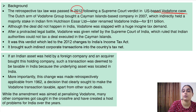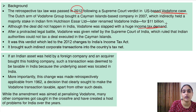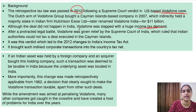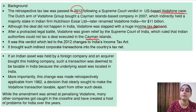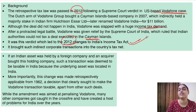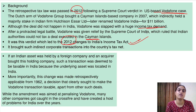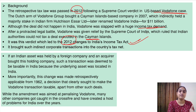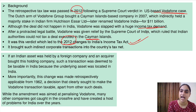Vodafone argued that since they had not directly bought assets in India, they should not be taxed in India. The legal battle went on and the Supreme Court gave a verdict that Indian authorities should not tax the deal executed in Cayman Islands. Because of this, in 2012 the rule of retrospective taxation came up — that indirect transfer of assets could also be taxed in India, and this change was made retrospectively from 1962. The Vodafone transaction was one of those affected, which created a lot of problems.